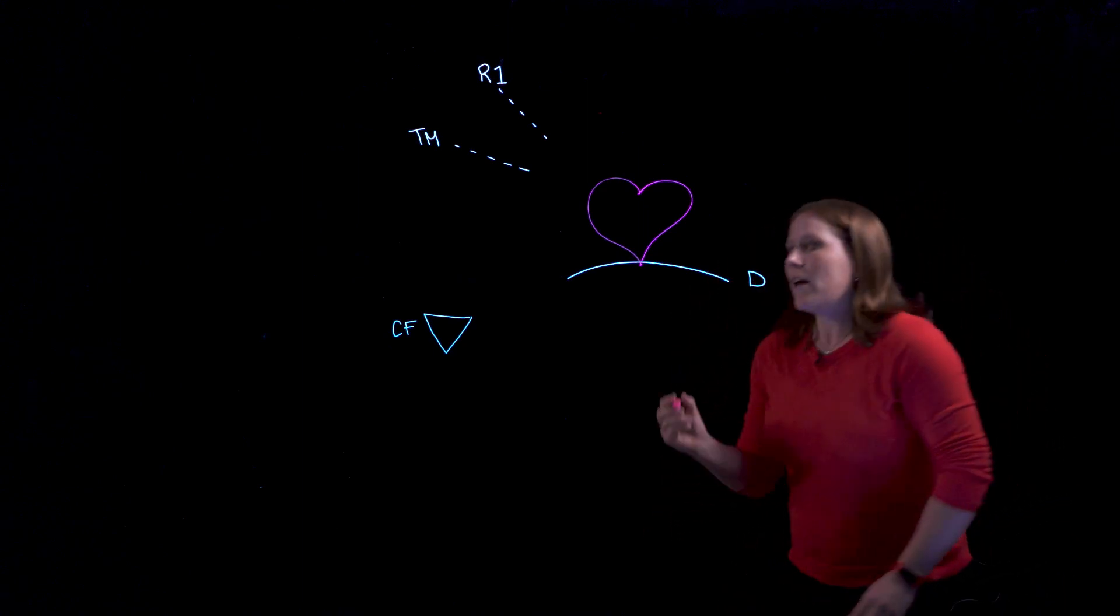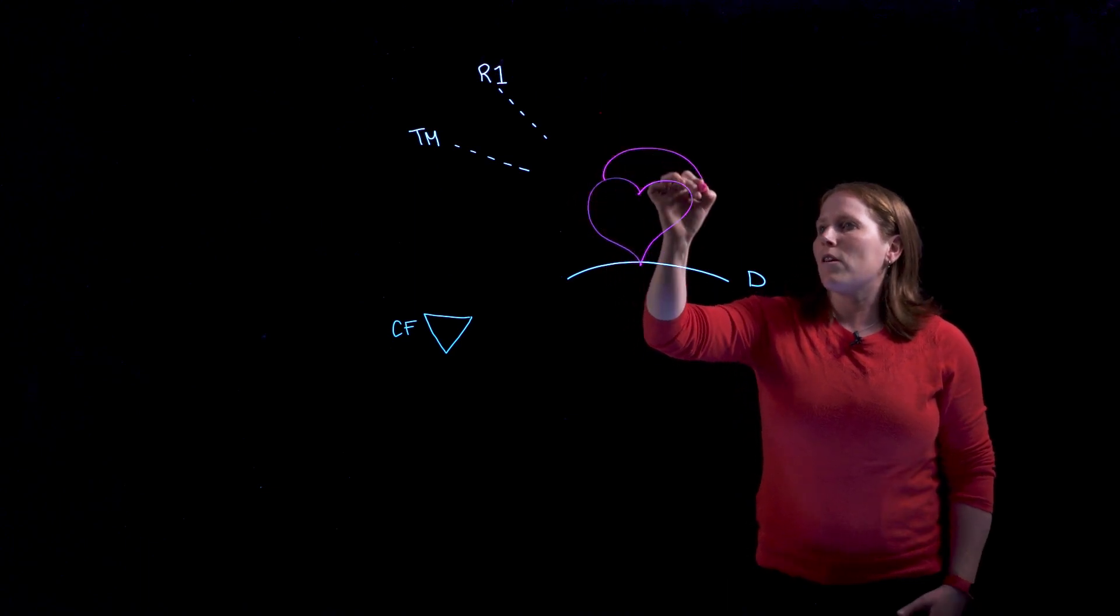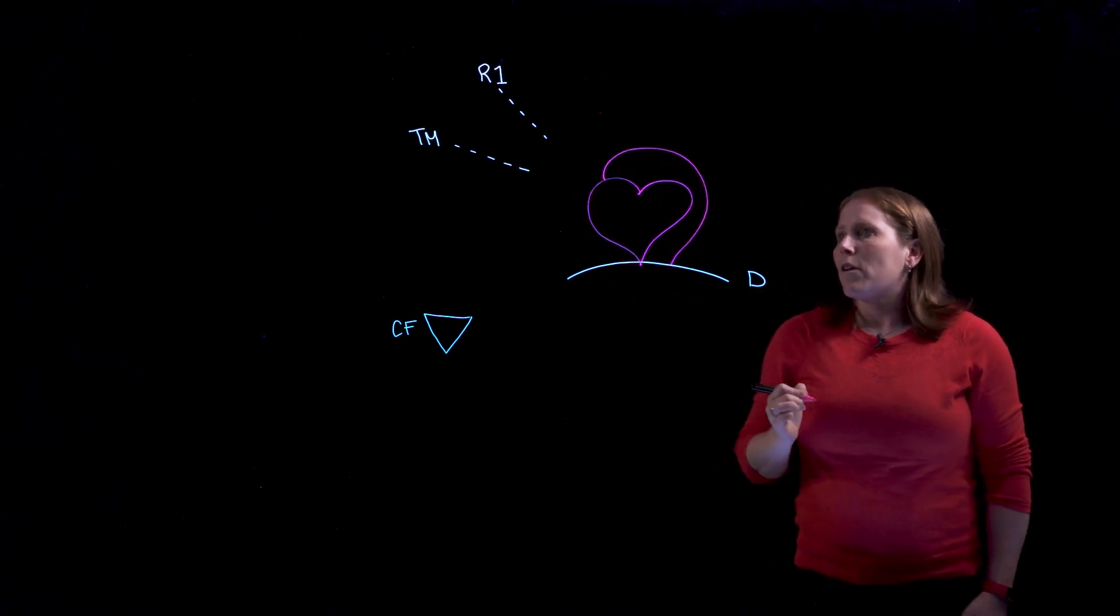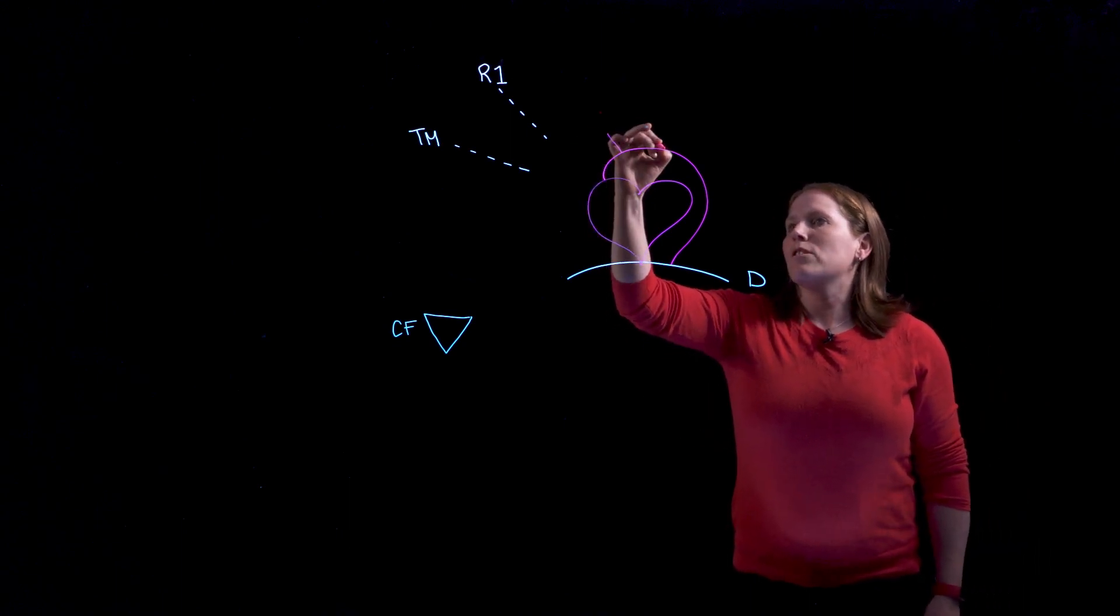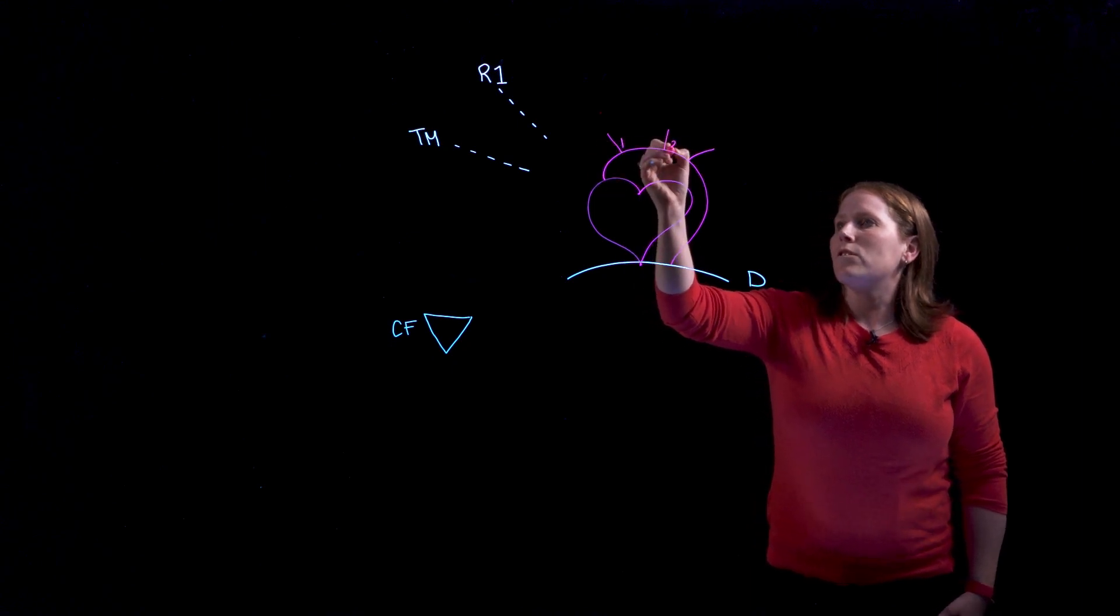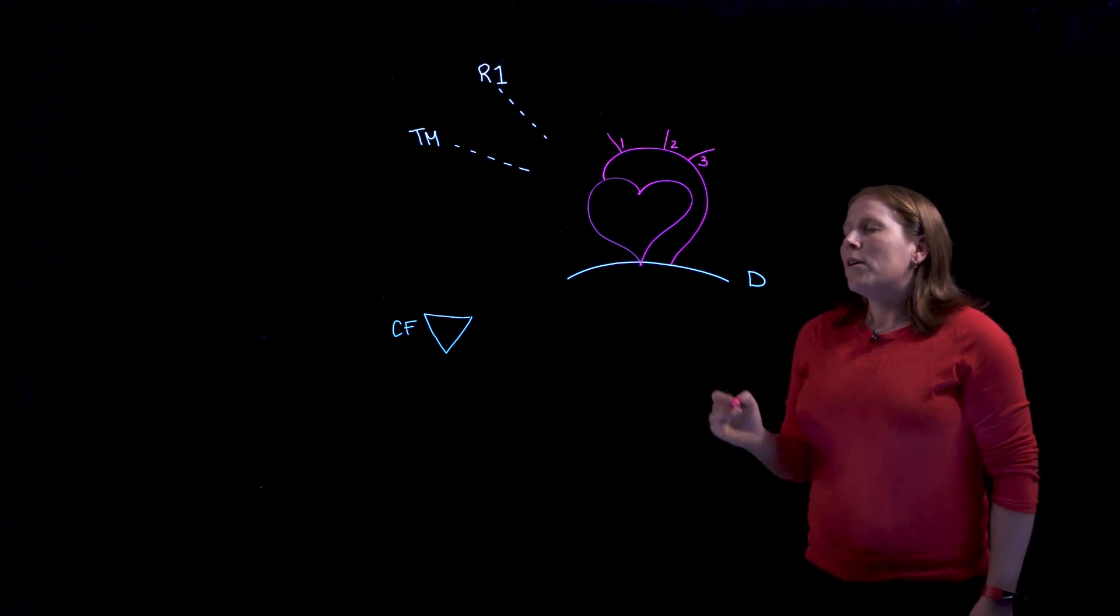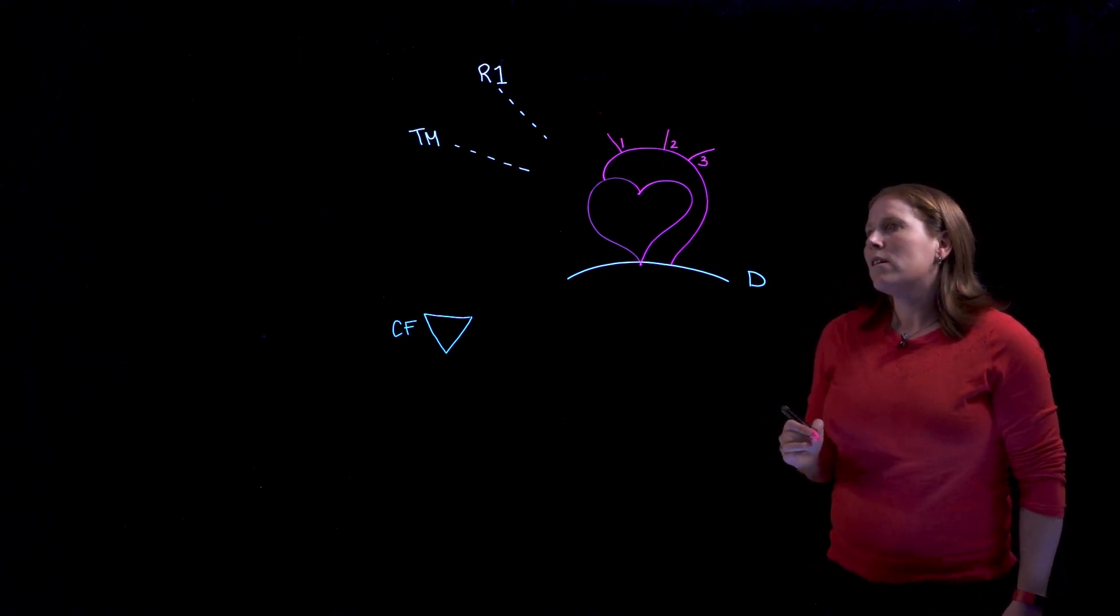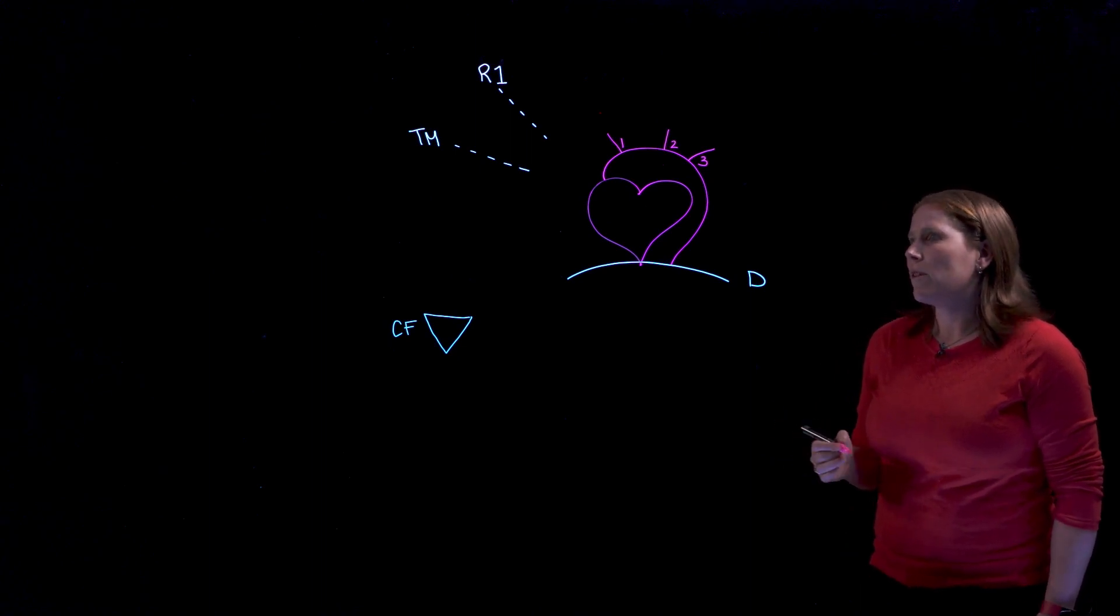Now we're going to start looking at the arch of the aorta coming off the heart. Now the arch of the aorta is asymmetrical at first. It has just three branches and so we'll label those one, two, and three and that will represent number one the brachiocephalic trunk, number two the left common carotid artery, and number three the left subclavian artery.